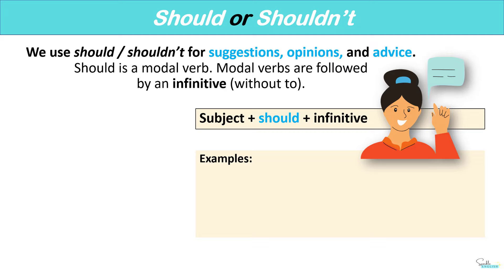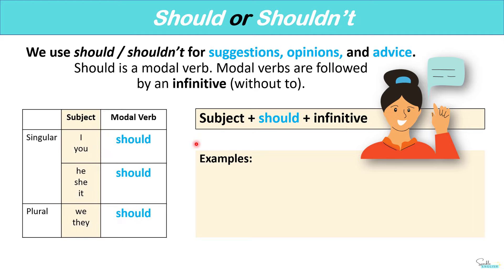Should is a modal verb. Modal verbs are followed by an infinitive without 'to'. We start with the subject — for example, I — then should: I should, you should, he should, she should. Note that with modal verbs, the modal verb stays the same for every subject. We do not say 'he shoulds' or 'she shoulds'. It's different from other verbs.